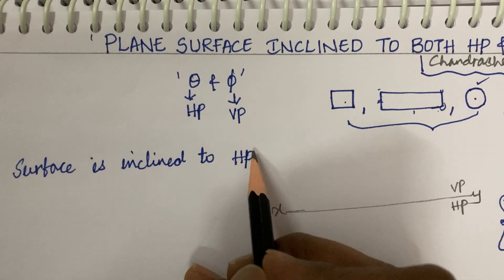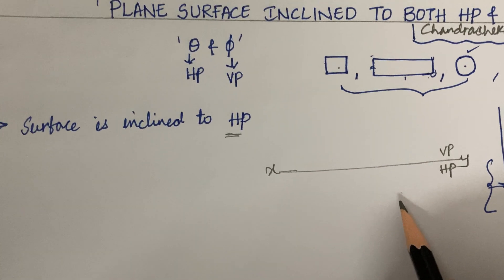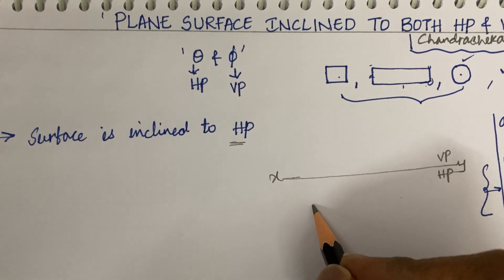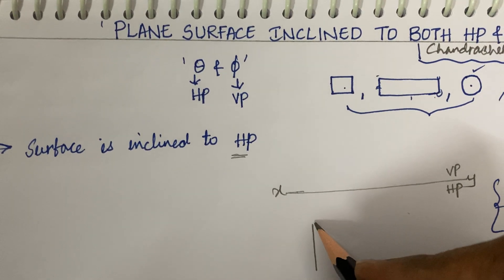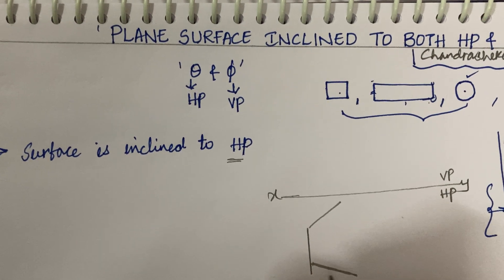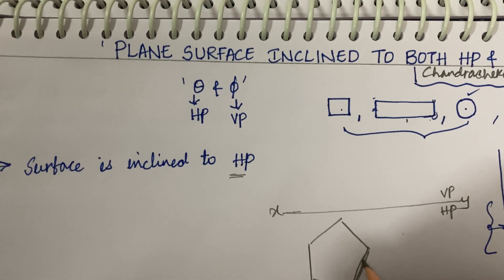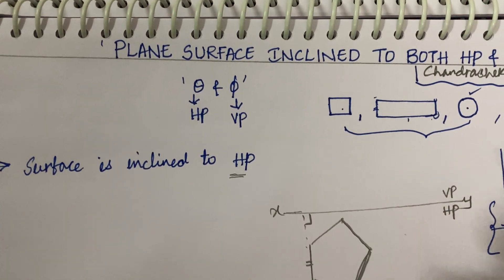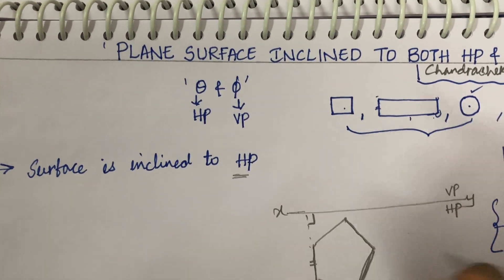Now, the surface is inclined to the horizontal plane. That means the true shape of the pentagon or hexagon will be obtained in the top view — below the reference line. Draw the pentagon below the reference line with the given angle and given distance. If you look at it, the straight edge is kept perpendicular. When a plane's surface is inclined to one plane, its straight edge needs to be perpendicular to the other plane.